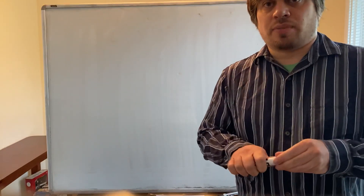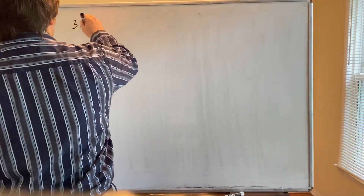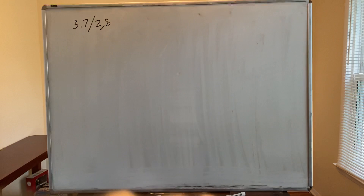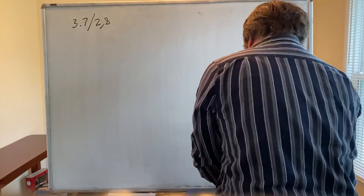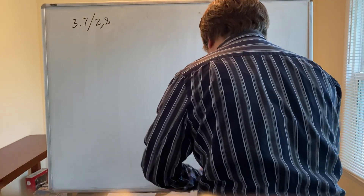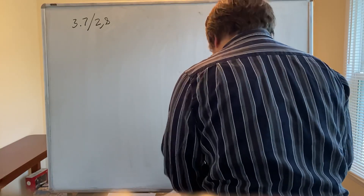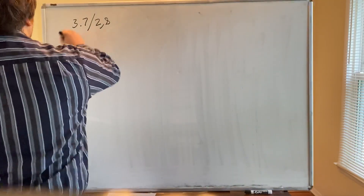Hi, this is the review for test one. You have the review sheet for test number one. Let's go through the problems. In section 3.7 there are numbers two and eight. Let me grab a textbook — okay, I'm back.